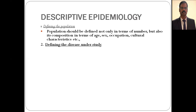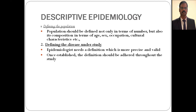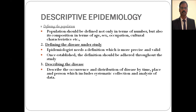Next, define the disease under study. An epidemiologist needs a definition that is precise, valid, and operational — meaning quantifiable rather than purely theoretical. Once the definition is established, it must be adhered to throughout the study and cannot be changed. The next step is describing the disease in terms of time, place, and person — the distribution component of epidemiology — through systematic collection and analysis of data.